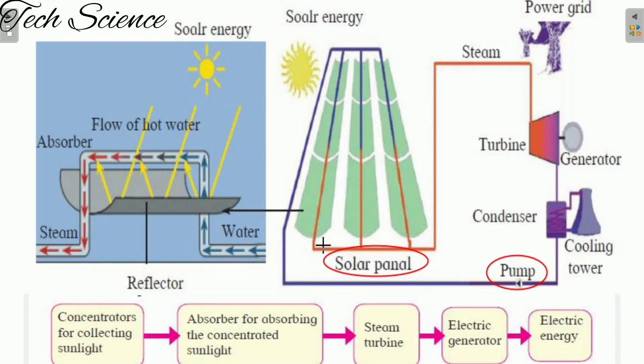In this way solar power plants work. Solar energy is utilized for heating the water into steam, and the kinetic energy of the steam is used for rotation of the turbine. This kinetic energy turbine drives the generator using kinetic energy, and finally this kinetic energy — due to the rotation of the magnet — is converted into electrical energy as per the principle of electromagnetic induction.